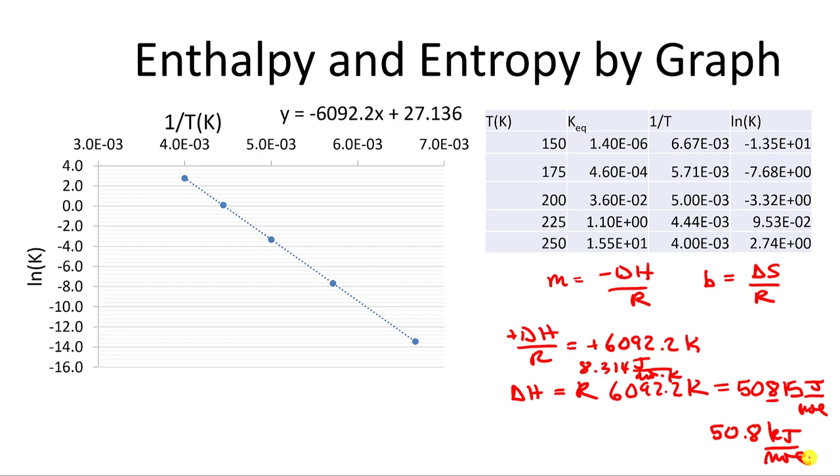For delta S, the intercept is 27.136. So delta S over R is going to be equal to 27.136. The y-axis units, it's unitless. So delta S is equal to R times 27.136.